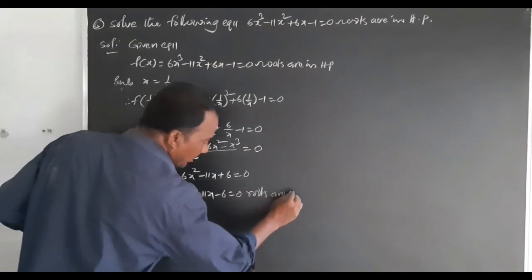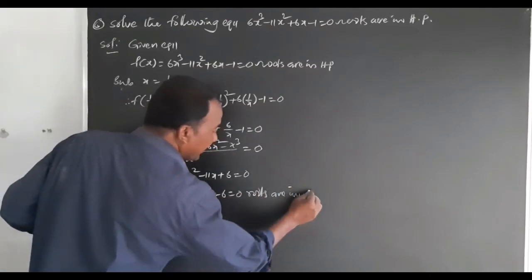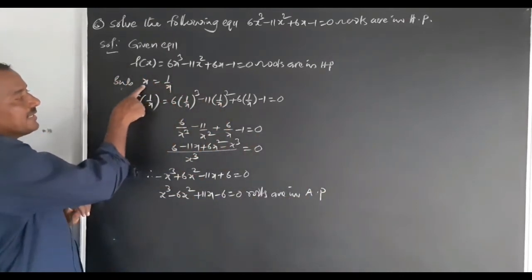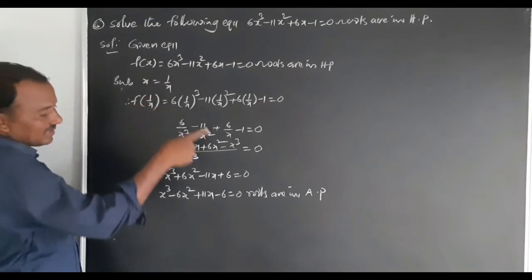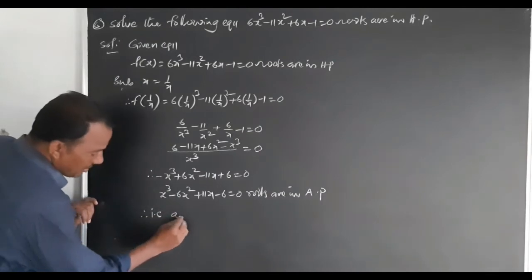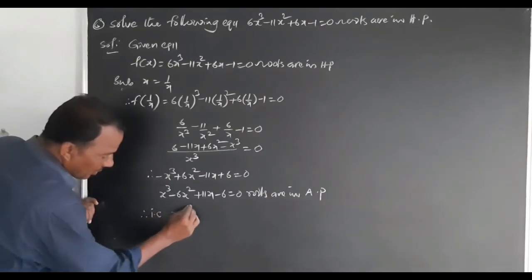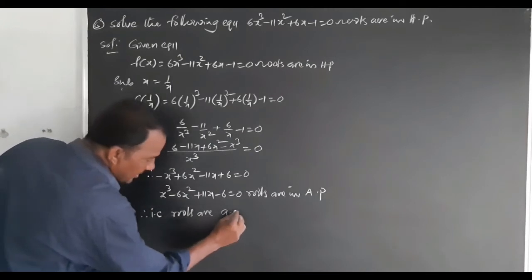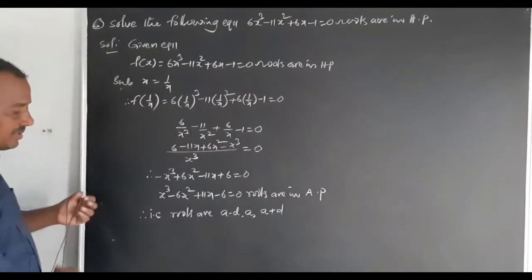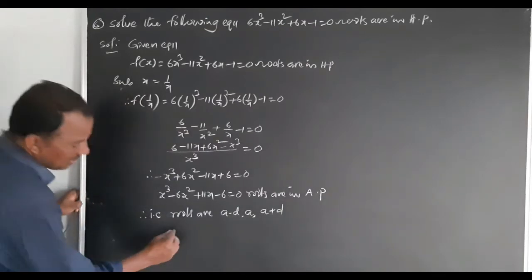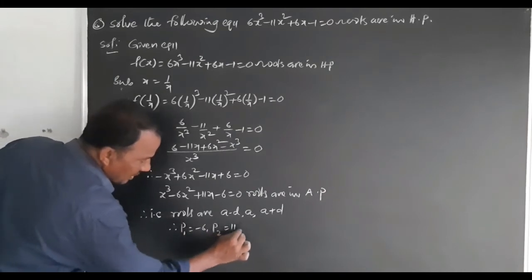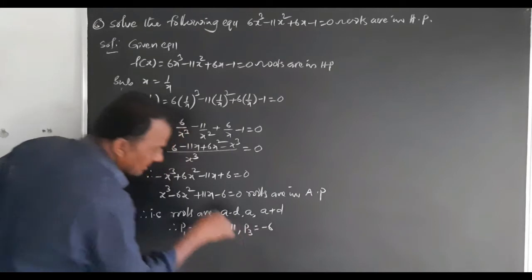So the roots are now in AP. Because substituting x equals 1 by x converts roots from HP to AP. Here the coefficients are: P1 equals minus 6, P2 equals 11, P3 equals minus 6.